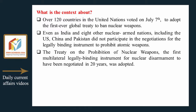The Treaty on the Prohibition of Nuclear Weapons — the first multilateral legally binding instrument for nuclear disarmament to have been negotiated in 20 years — was adopted.